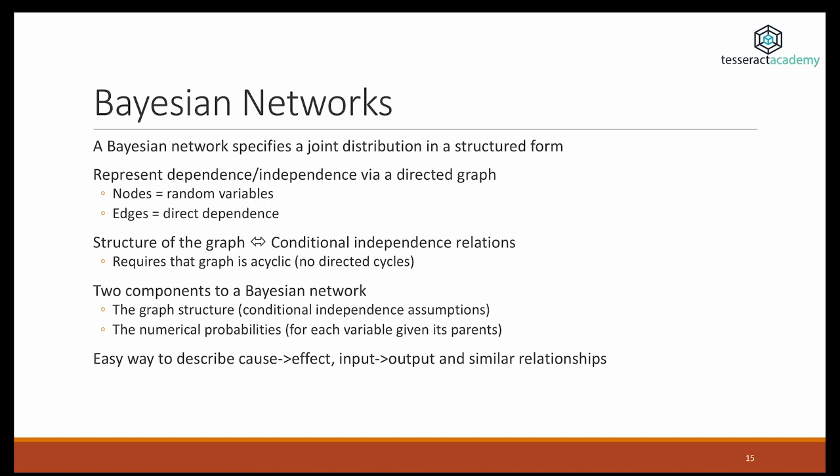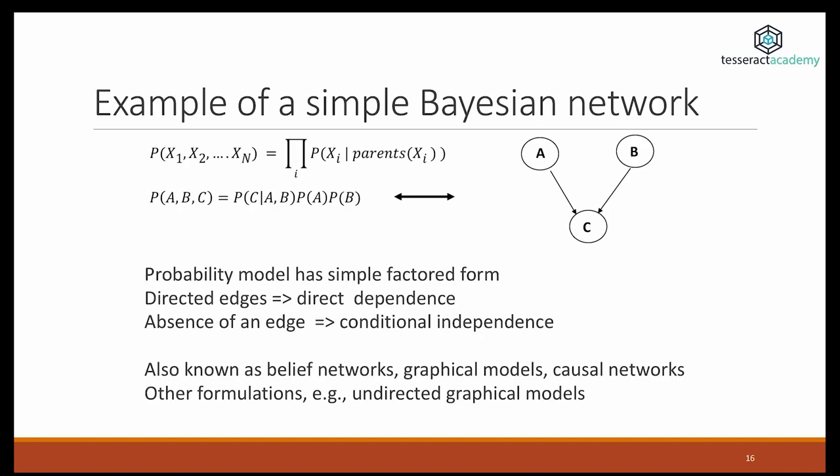The second one is a table of numerical probabilities. This is an example of a very simple Bayesian network, and also its representation in formulas. We can see here that we have a variable C, which is affected by variables A and B, and the directed edges mean that there's a direct dependence on the part of variable C from A and B. The absence of an edge between A and B means that these two variables are conditionally independent given C.